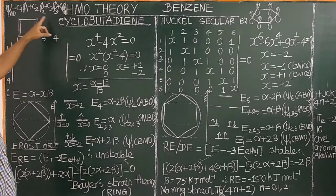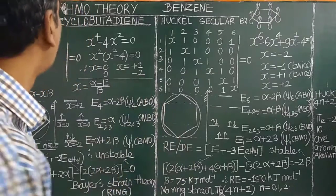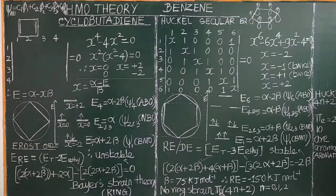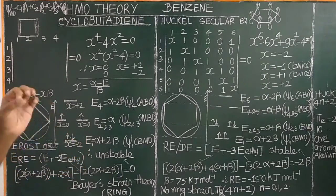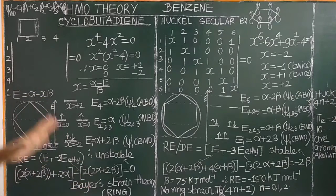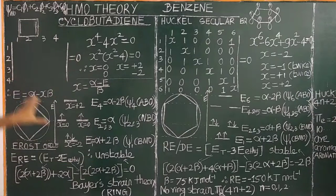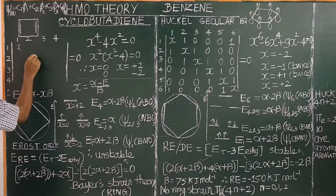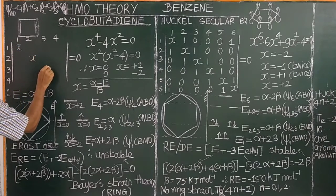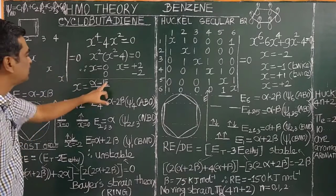The molecular orbitals are constructed from the atomic orbitals with coefficients C1, C2, C3, and C4. Now, how do we set up the Huckel secular equation? If you look at the diagonal elements, you can find x. x is equal to (alpha minus E) divided by beta.